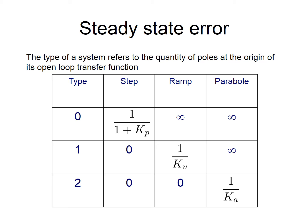For a Type 0 system — meaning no poles at the origin — a step input gives steady-state error of 1 over (1 + kp). A ramp input gives steady-state error going to infinity, and a parabolic input also gives infinity. For a Type 1 system, the steady-state error for a step input goes to zero, because kp goes to infinity. For a ramp input, steady-state error is 1 over kv, and for a parabolic input, we have infinity.